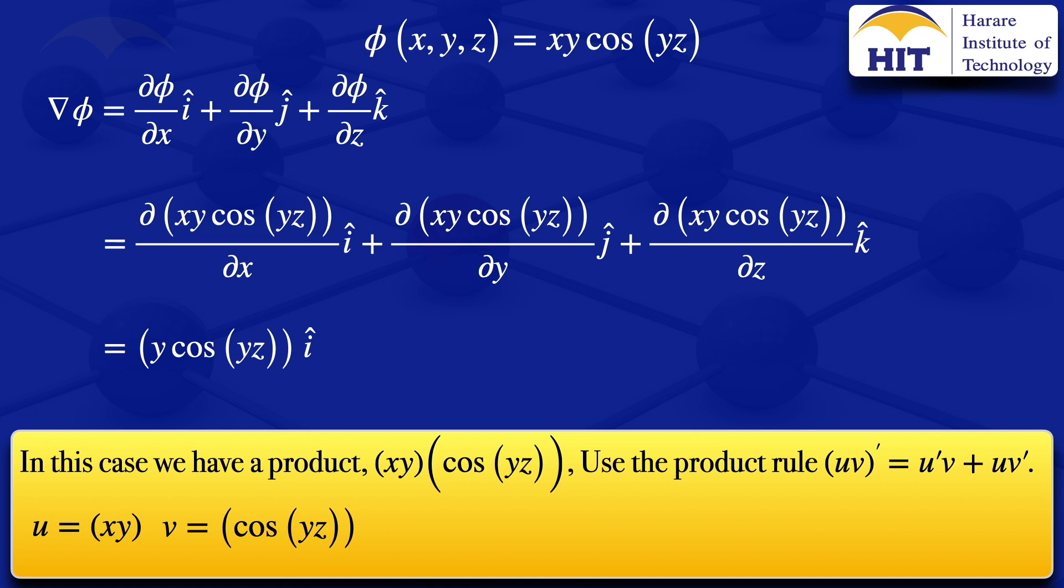So using the product rule, we need the u prime. For the u prime, we differentiate the u with respect to y and we get an x. For the v prime, we differentiate the v with respect to y and we get minus z sine of yz. So that's the part for using the product rule there and then I'll go in and apply this stage so that we have our result there is x cosine of yz plus x times y multiplied by minus z sine of yz and j.